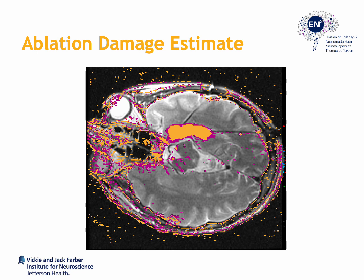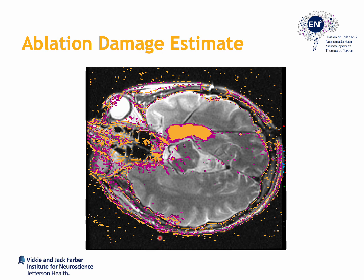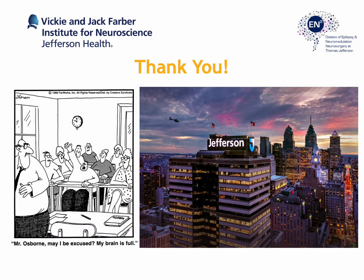This approach with two lasers allows adequate coverage of the target structures, including the amygdala, piriform cortex, hippocampus, parahippocampal gyrus, entorhinocortex, and pararhinocortex. It is critical to maintain a trajectory that covers the medial aspects of these structures, as doing so allows the surgeon to leverage the heat sinks created by the cisterns and create curved ablations even with a straight laser probe. I hope you found this approach to laser ablation of the mesial temporal lobe structures helpful. Thank you for your time and attention.